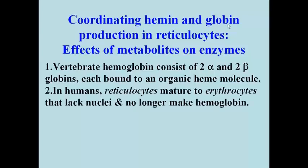In humans, globins and heme or hemin are synthesized in reticulocytes produced by bone marrow. When the reticulocytes mature, they lose their nuclei and become erythrocytes or red blood cells. The erythrocytes no longer make either heme or globin.